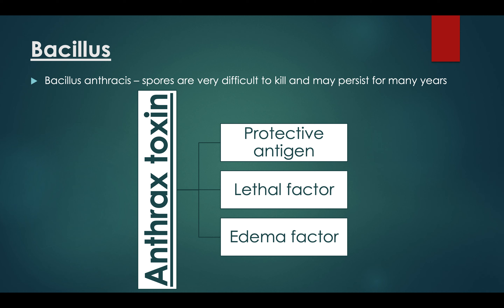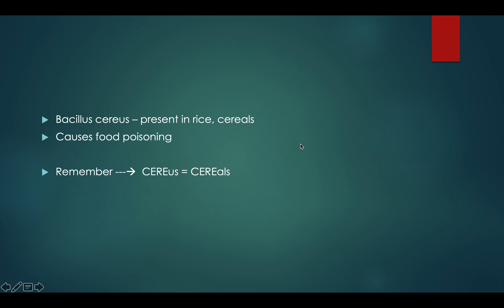That's one reason it was used as a biological weapon many years ago — just a fun fact. The anthrax toxin is actually a combination of three components: the protective antigen, the lethal factor, and the edema factor. You won't be tested much on this, but if you get a question on anthrax toxin or any of these three, remember it's produced by Bacillus anthracis.